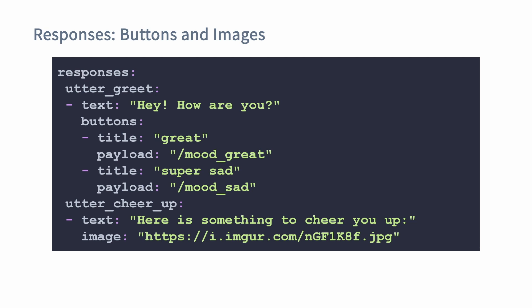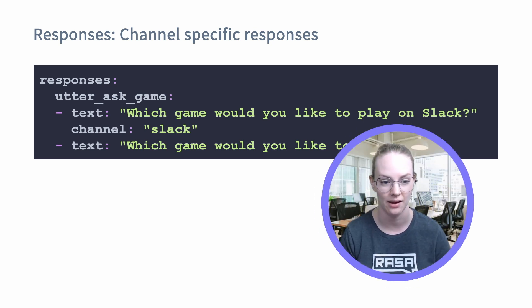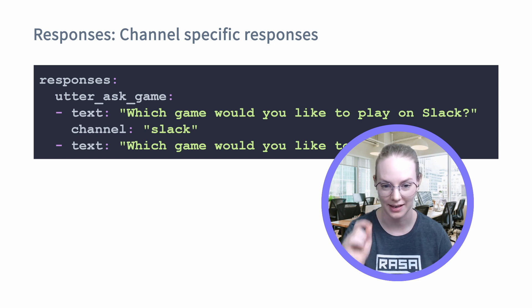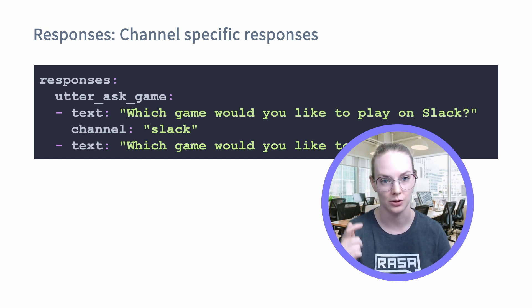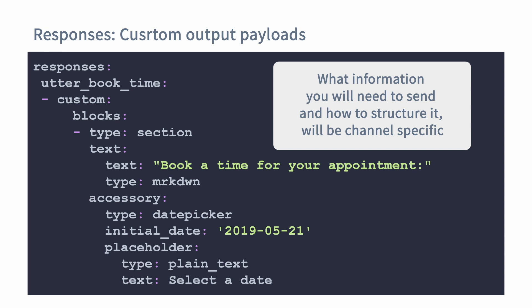Rasa will send a JSON with this information. If you are running your Rasa assistant across multiple channels using multiple connectors, you can select your reply based on the specific channel someone has interacted with your assistant on. Here we have a specific channel — Slack — and the text responded there will be "Which game would you like to play on Slack?" while any other channel will get the second response. You can also provide more information than just responses in that hierarchical JSON format, and the specific fields you'll need will also be channel-specific, depending on where your bot is deployed.